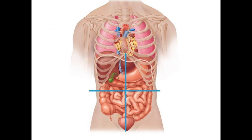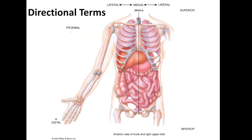These kinds of terms are called directional terms. At the end of all this, when I ask you where are your eyebrows, instead of saying the eyebrows are on the side of the face to the right and left of the nose and higher than the nose, you would say the eyebrows are lateral and superior to the nose. These are all terms we use to describe the relative position between parts of the body, and you're going to notice that these terms come in pairs.